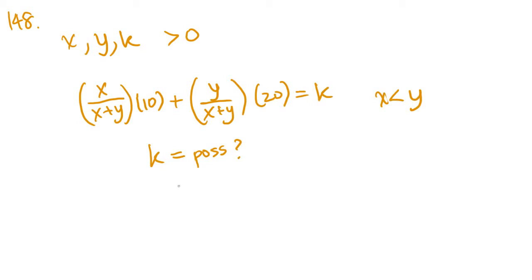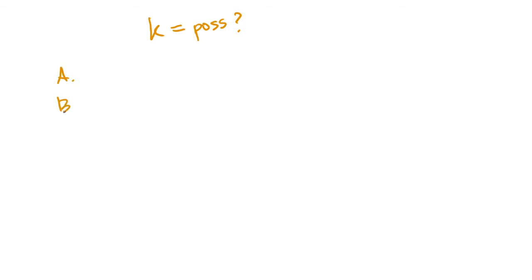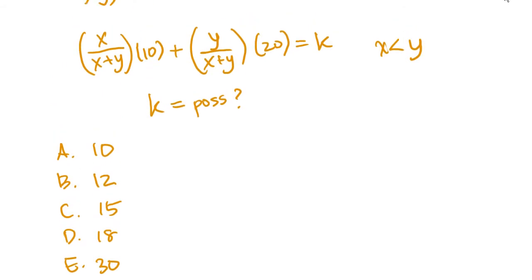They give us five answer choices: A through E, with values 10, 12, 15, 18, and 30. This looks easy for now, but wait until you're actually trying to solve it.